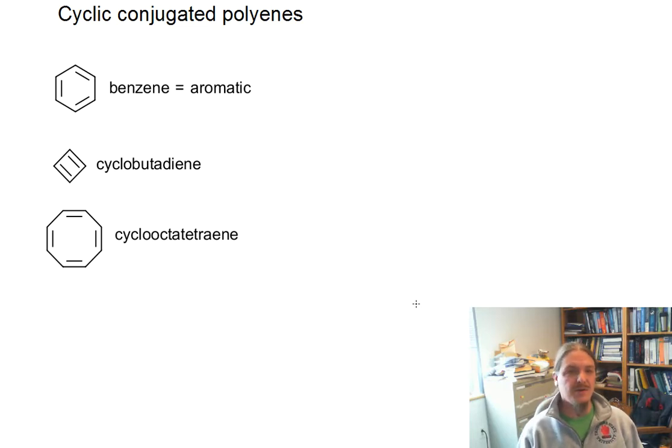Hello. In this video, I'm going to talk about some cyclic conjugated polyenes, of which benzene is just one. In previous videos, I've talked about benzene having this additional resonance stabilization, which we call aromaticity.